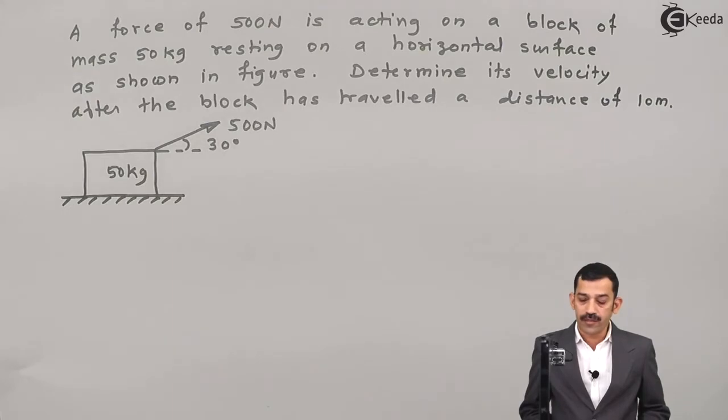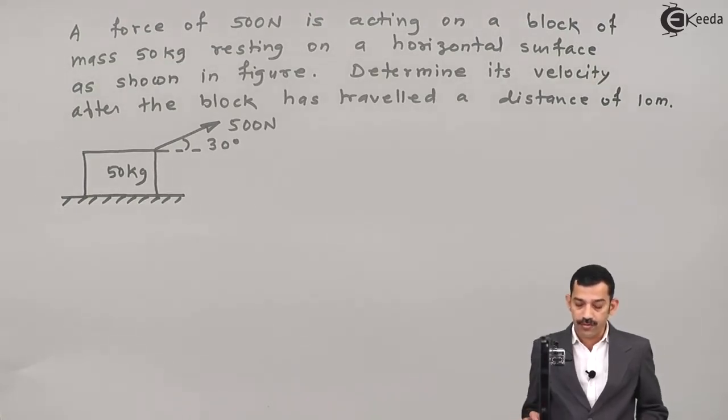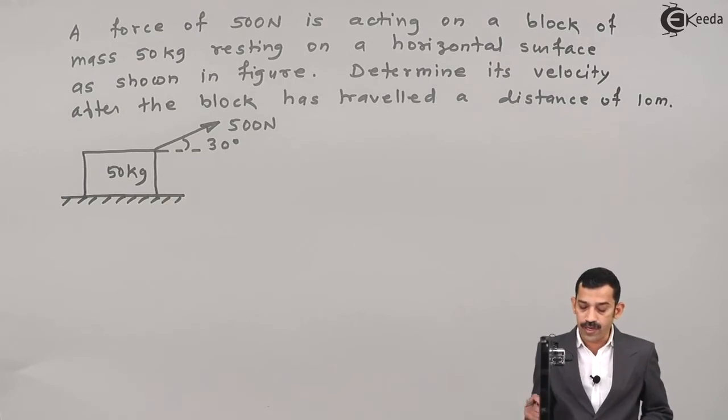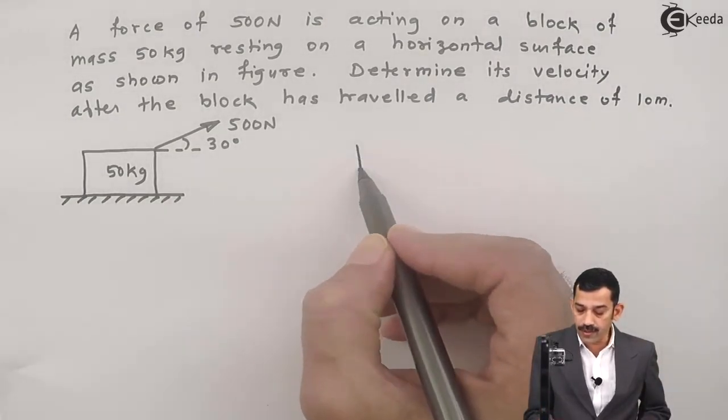Determine its velocity after the block has traveled a distance of 10 meters. Let me first draw the free body diagram of this block. If you draw the free body diagram, what will you get here? Say this one is a block.